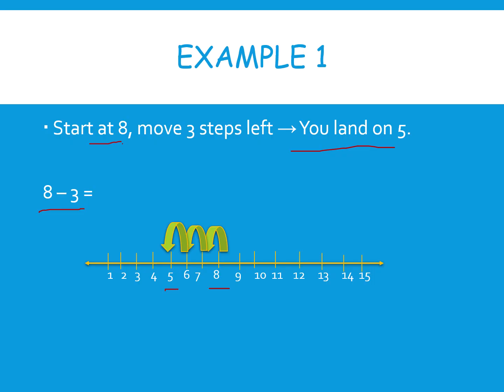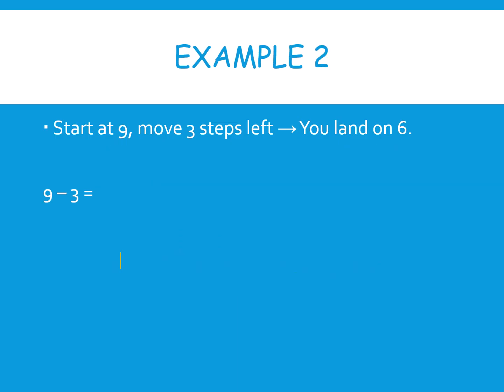What is the answer? Eight minus three equals five. Here is another example. We are doing nine minus three. How much is it? First, you start on the nine, go to the left side — that means backward — three steps.